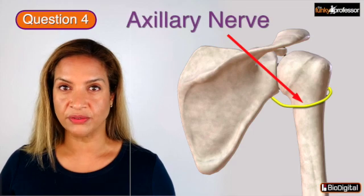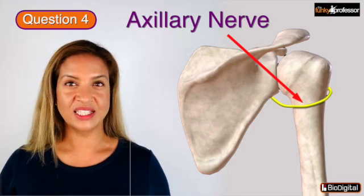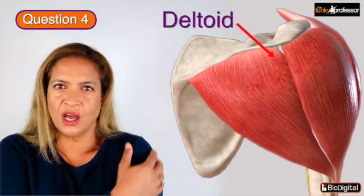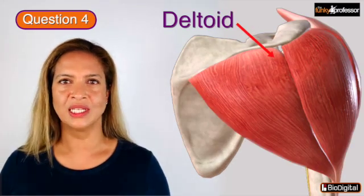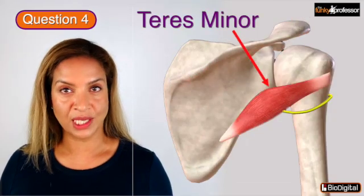Question 4 is the axillary nerve. It is a branch of the posterior cord of the brachial plexus. The axillary nerve supplies the deltoid muscle, which is that lovely large round muscle of the shoulder joint, and it also supplies teres minor, which is one of the four rotator cuff muscles.